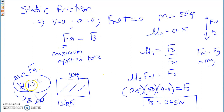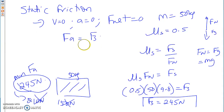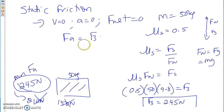However, that applied force of 245 newtons — the FK and the FS will not be the same. Let's change the scenario slightly. We're going to give a mu K for that same object on that surface. Mu K was only 0.25. So we're going to calculate FK: mu K times FN equals FK. So 0.25 times 50 times 9.8 equals FK.